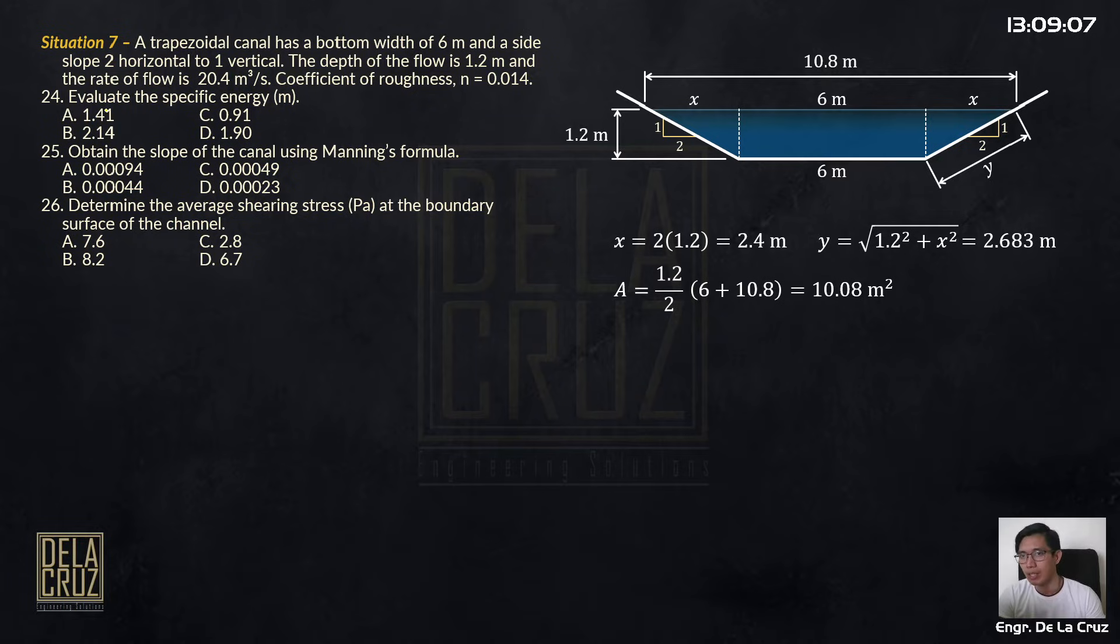So evaluate the specific energy. The specific energy is v squared over 2g plus d. That is simply the velocity head plus the static head.